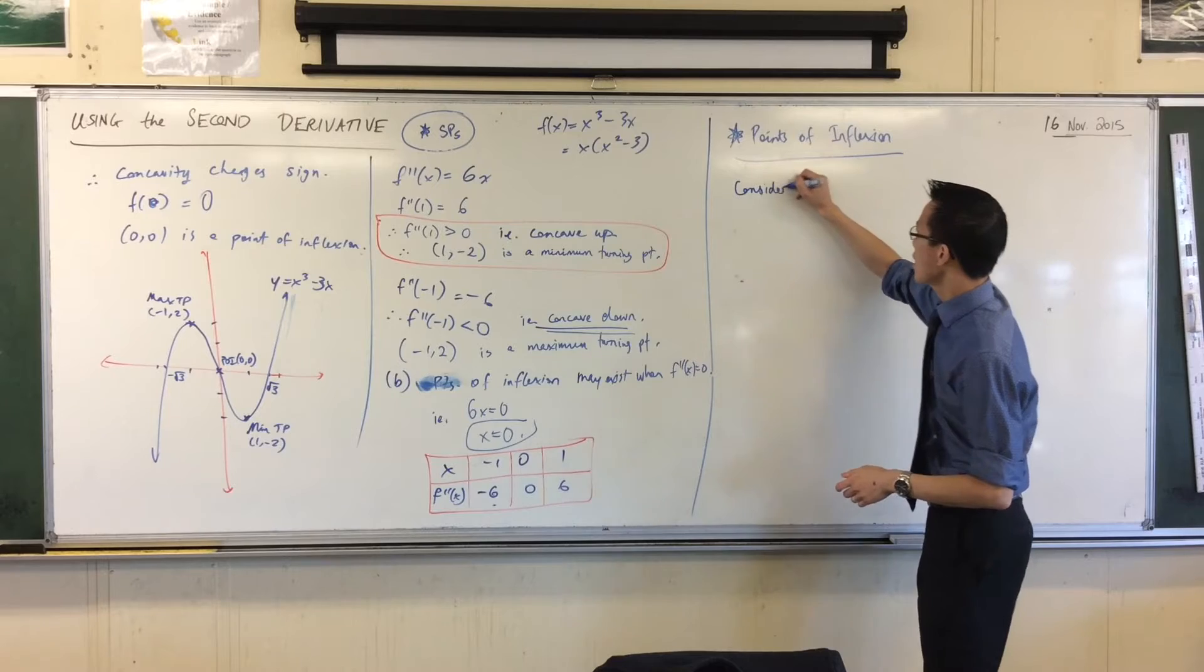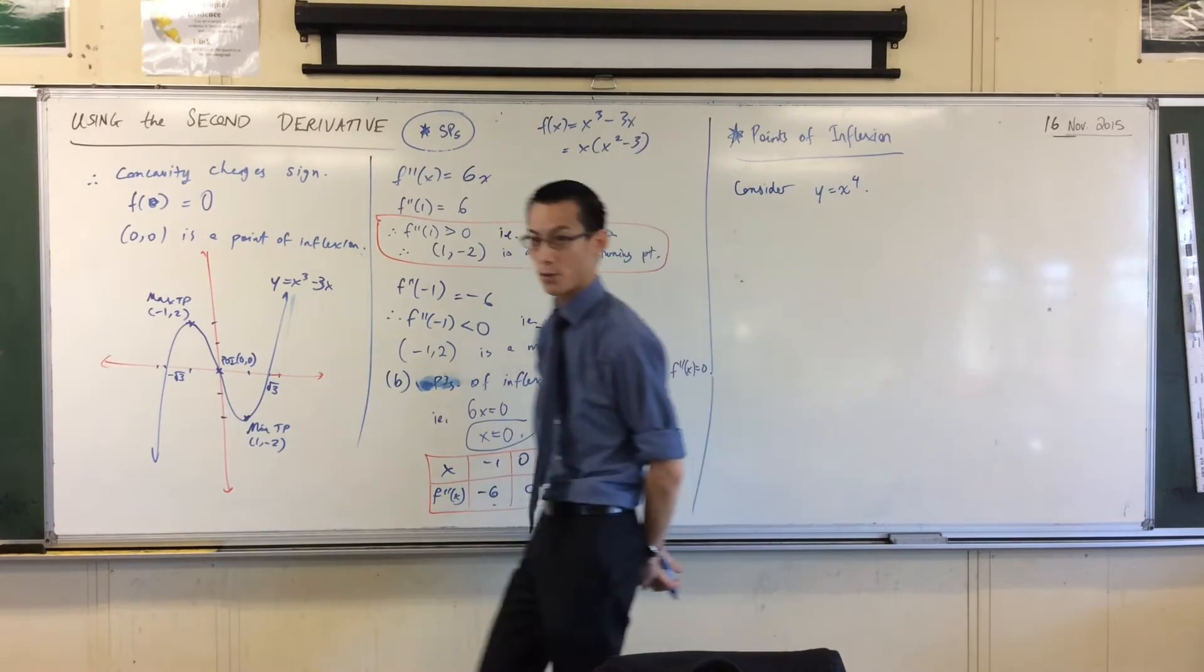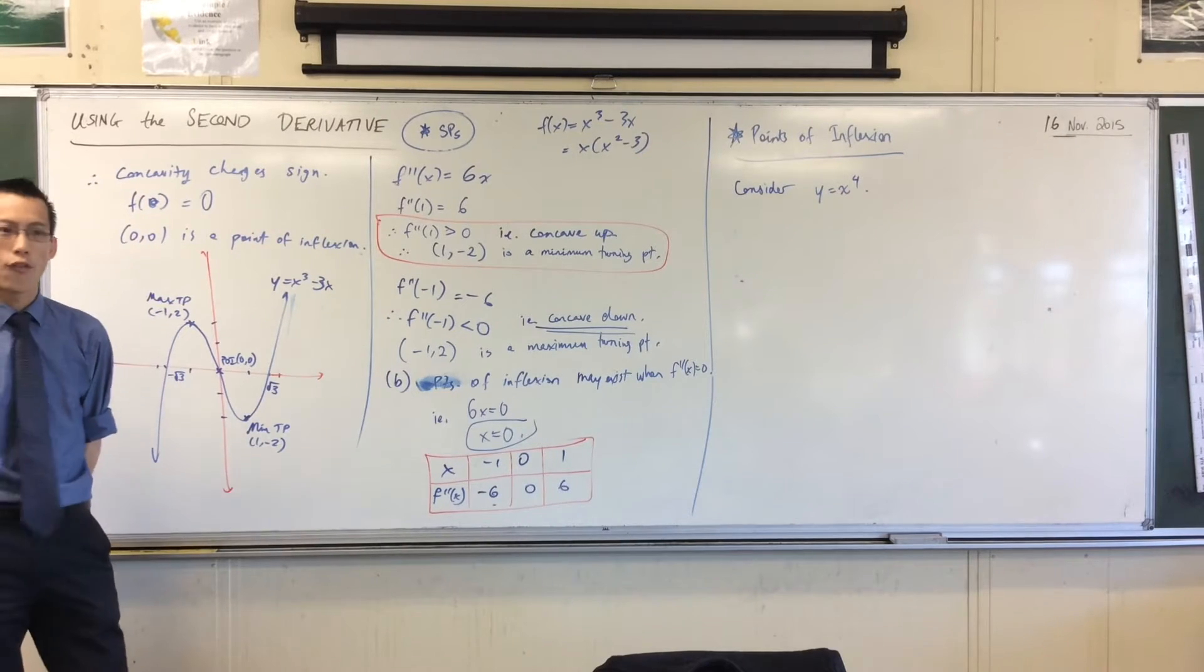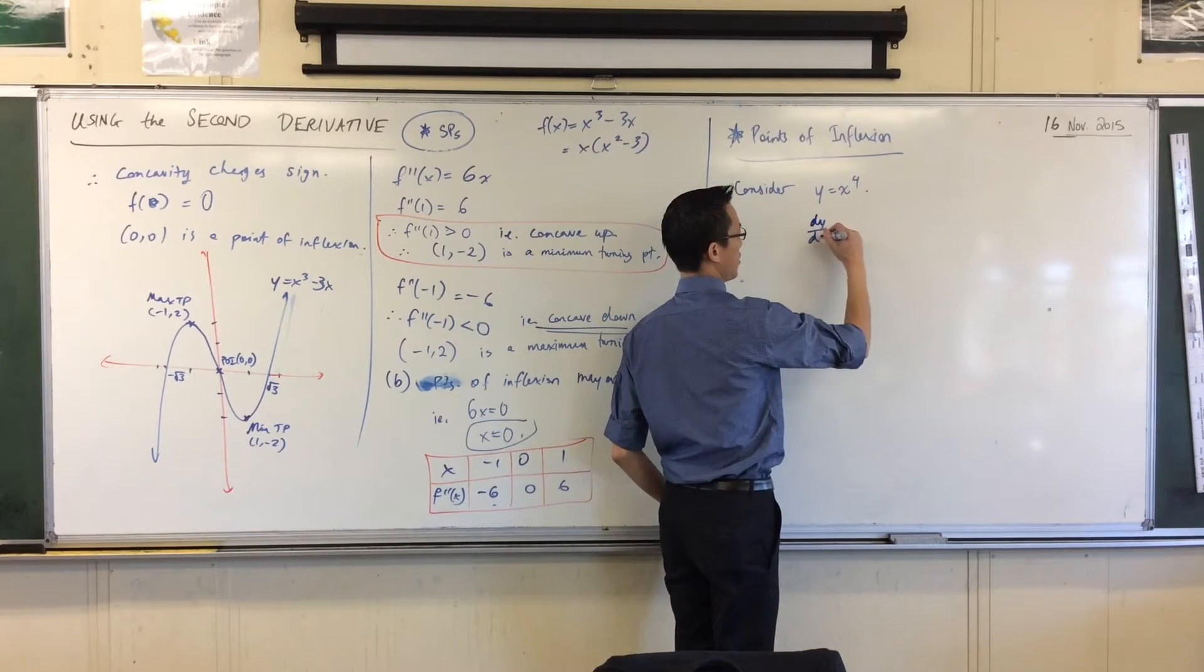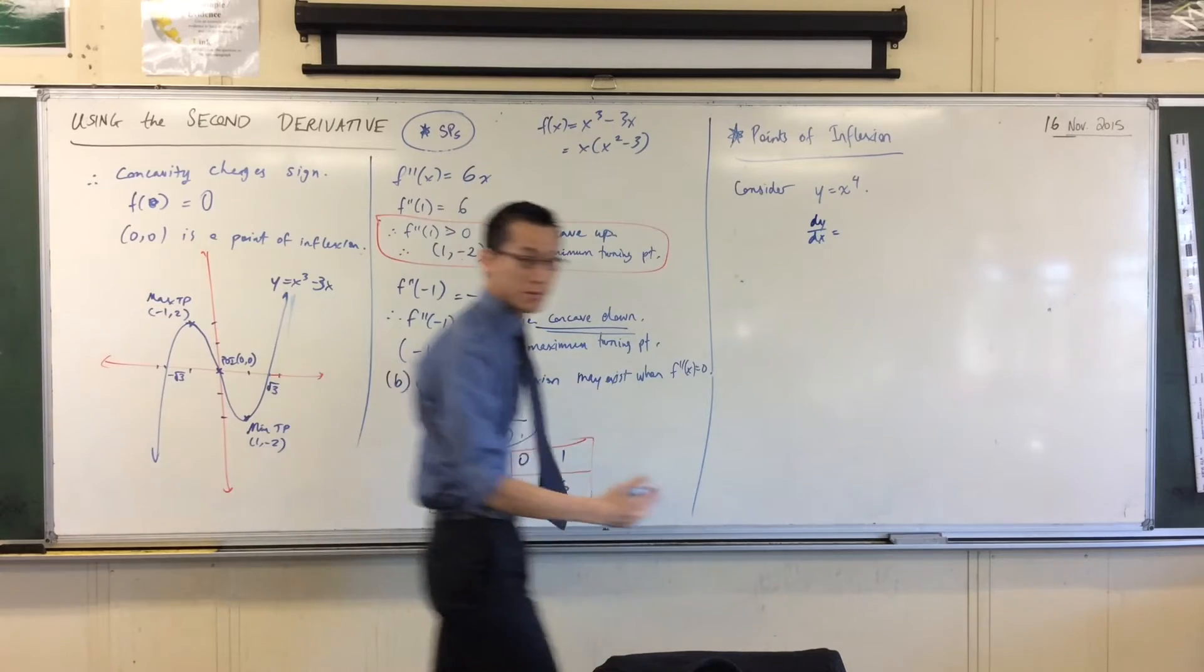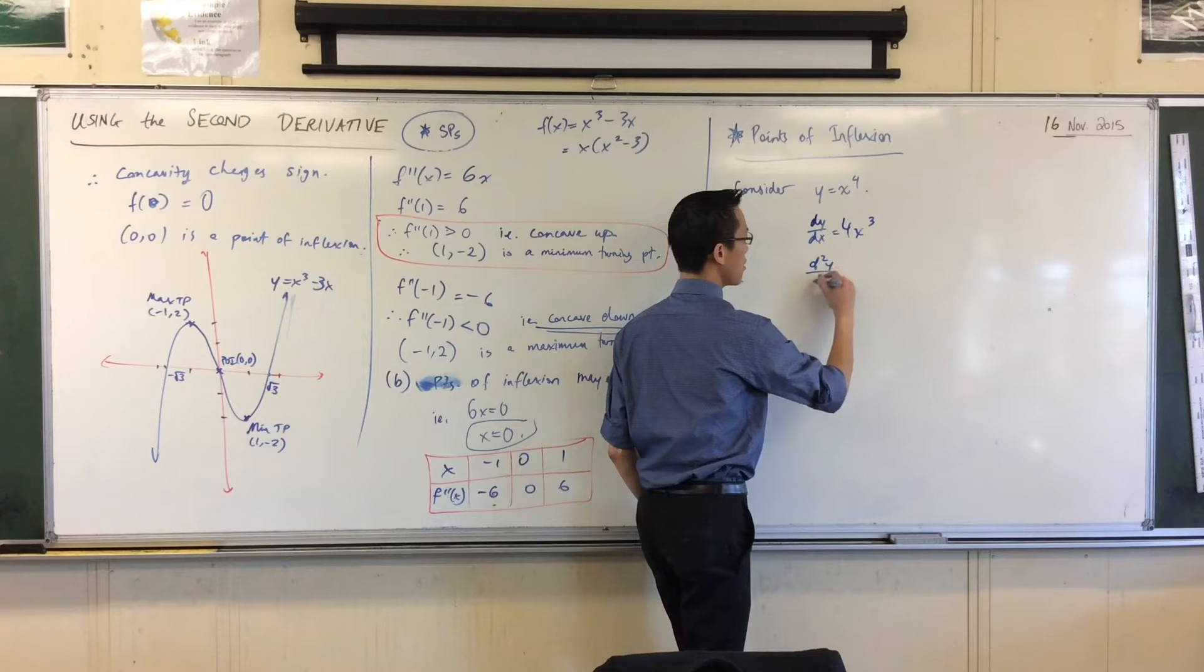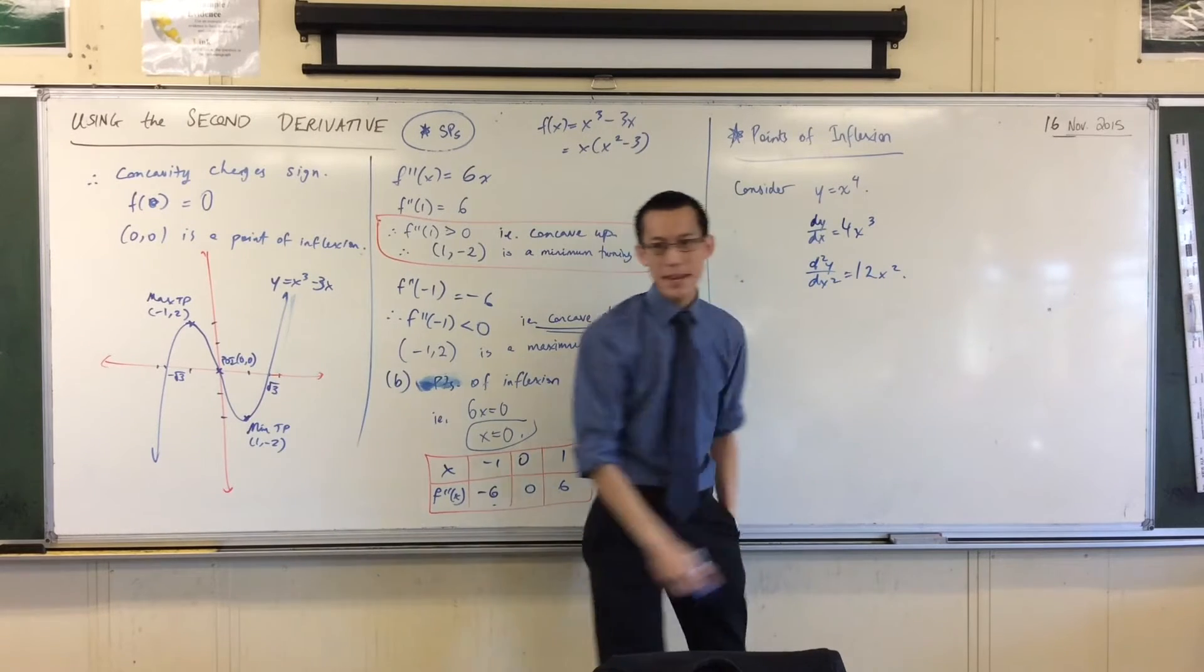So consider y = x^4. It's lovely to be able to take a really simple example and see what's going on here. y = x^4 is very easy to differentiate. I can find the first derivative and the second derivative almost without thinking. First derivative? 4x^3. Second derivative, you just go again and you get 12x^2.